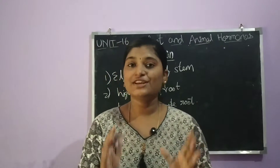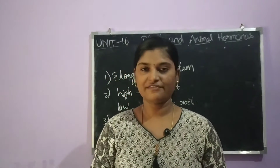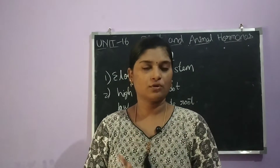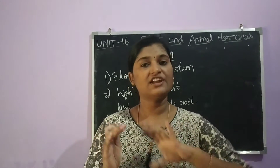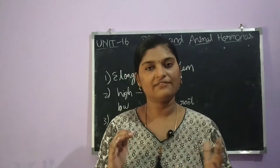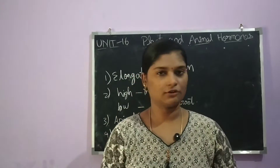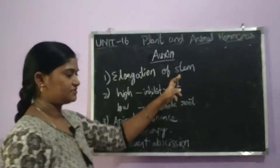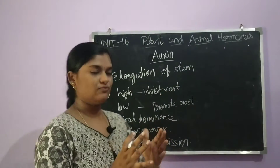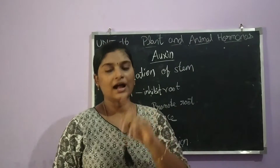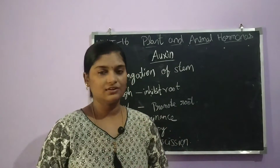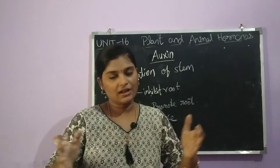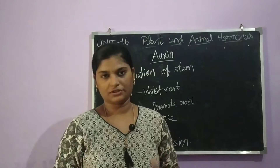Now we are going to see the physiological functions of auxin. So what are the functions of auxin in a plant? The first function is elongation of the stem. The main reason for stem elongation is auxin.